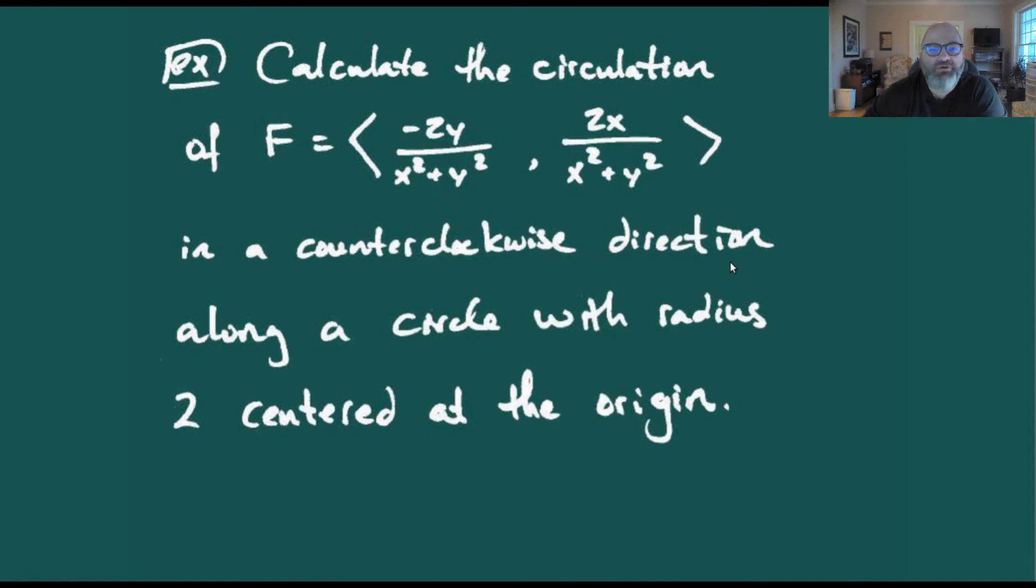What we're asked to do in this case is calculate the circulation of a vector field F being negative 2y over x squared plus y squared, 2x over x squared plus y squared in a counterclockwise direction along a circle with radius 2 centered at the origin.